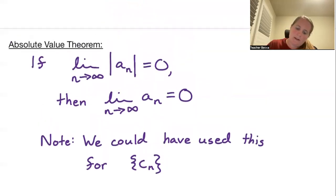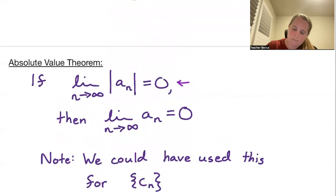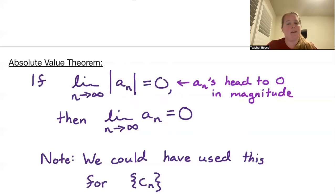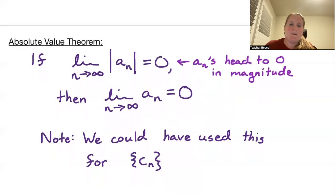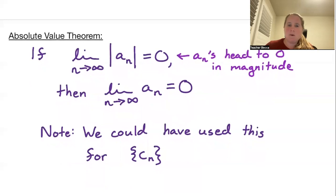So essentially what we're seeing here, the idea is that the a_n's head to zero in magnitude. So they get closer and closer to zero as we get on, whether they're positive or negative. Then the limit has to just go to zero in general. So this is another trick we have essentially for checking convergence. If we have that (-1)^n in front, we can ignore it as long as it's heading to zero.